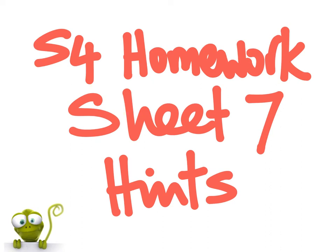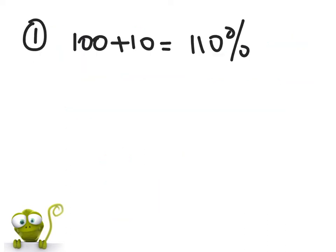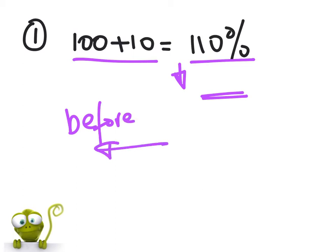Okay, here we go with some hints for homework sheet number seven. The first question is another percentage question: after a ten percent increase in train prices, a single to Glasgow costs eight pounds eighty. A ten percent increase means 110 percent. We turn that into a decimal, and we want to know the price before. So there's the magic word 'before'—we're going backwards in time, so it's a reverse percentage question.